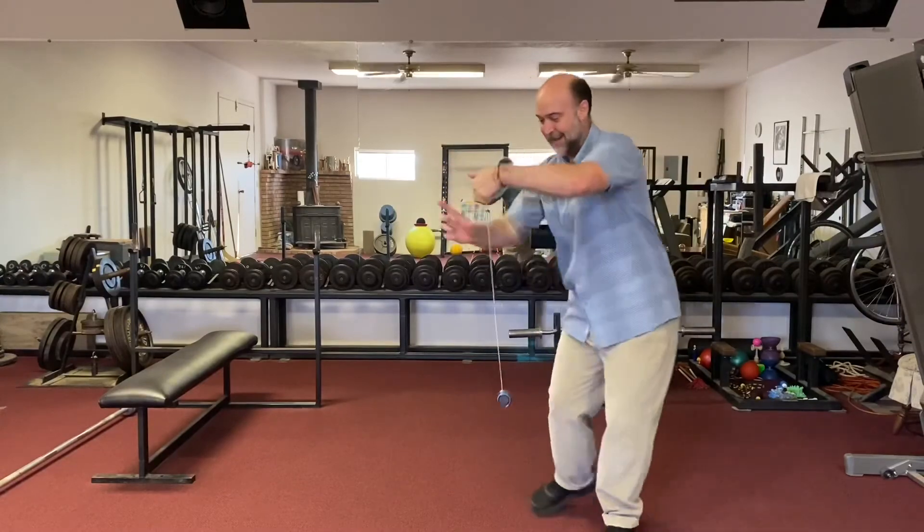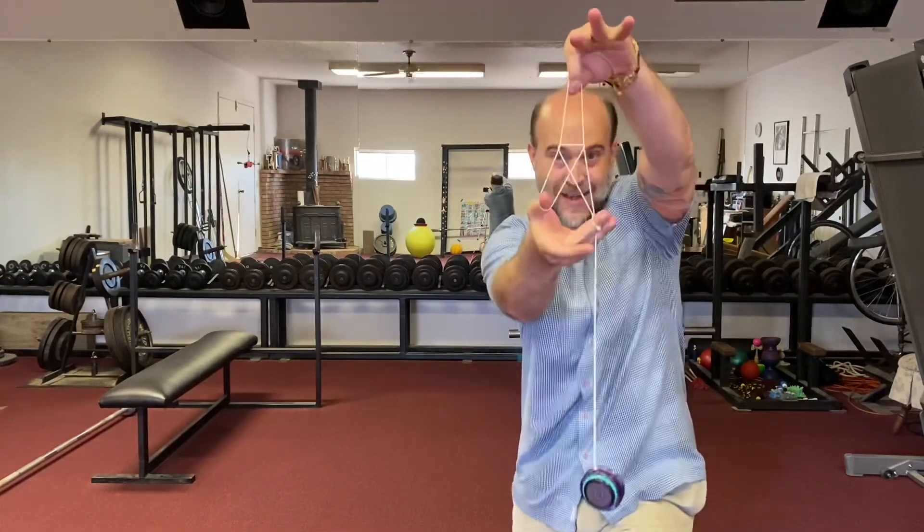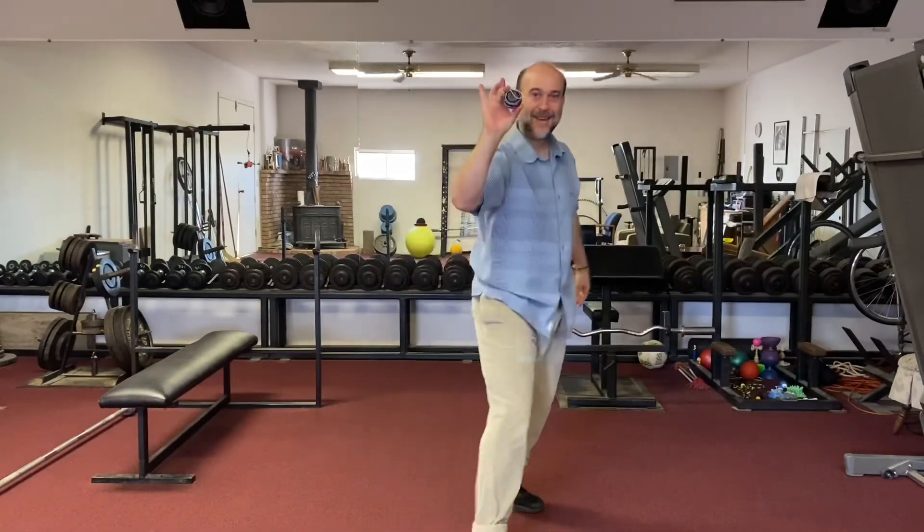With the traditional yo-yo, can you see any triangles in the string trick? And how might they be related?